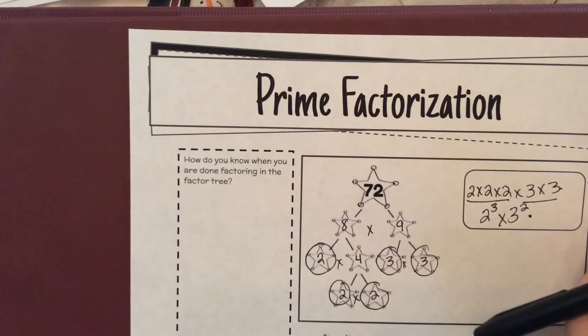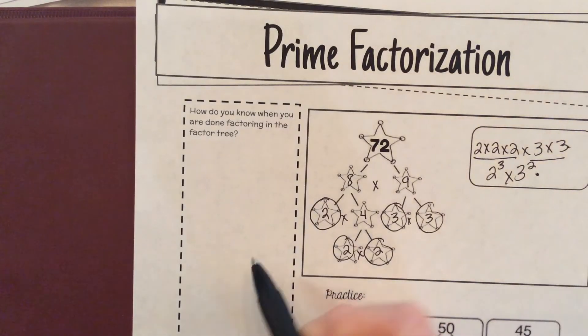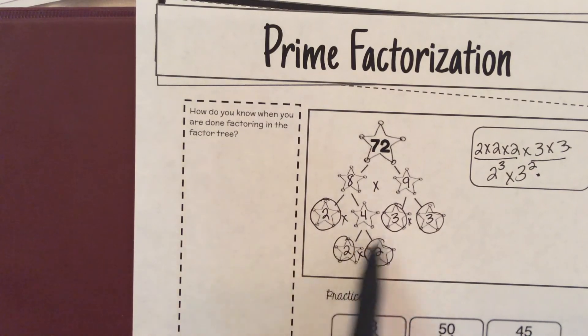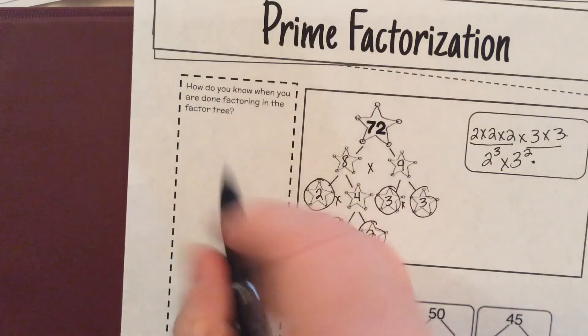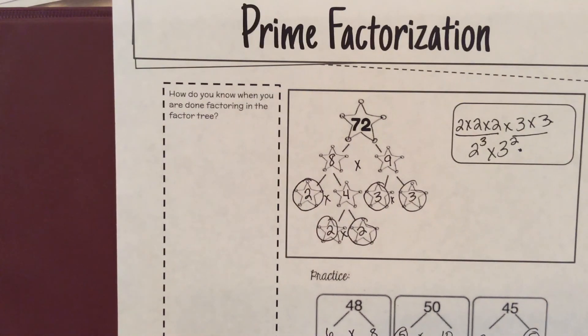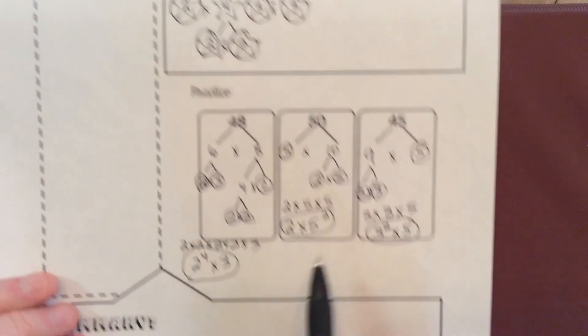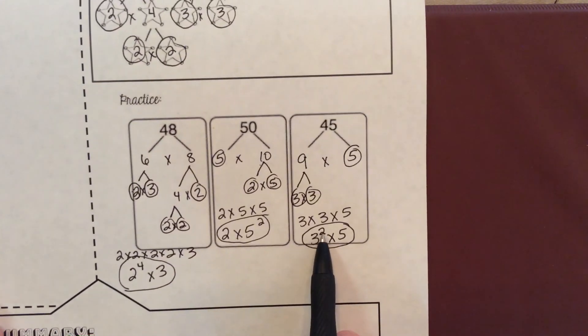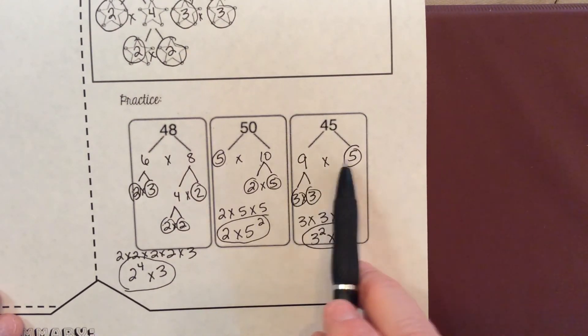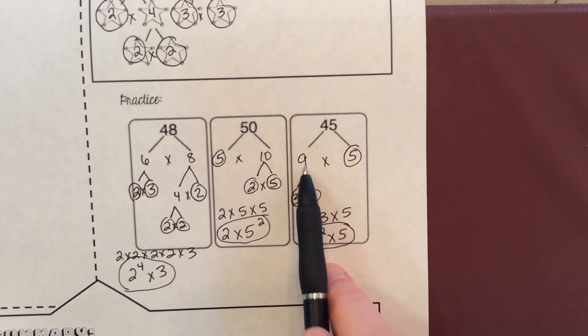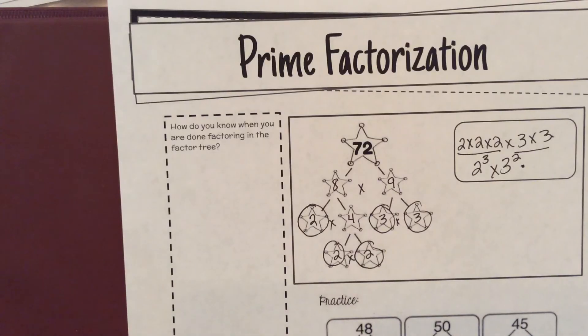Now your reflection question over here says, how do you know when you are done factoring in the factor tree? How do you know when to stop when you have reached prime numbers? Now what happens a lot of times is that you'll see, like, a problem like this right here, and it would say, what is the prime factorization? People may put, like, nine times five. Well, nine isn't prime. Your numbers have to all be prime.